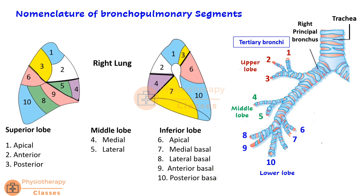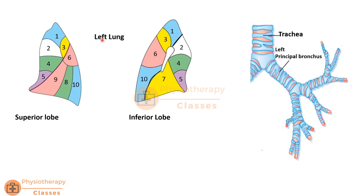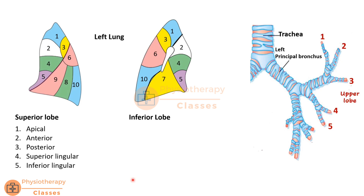Now let us look at the left lung. Again we can see the anterolateral and posteromedial surfaces with the hilum and the bronchial tree with segmental bronchi. There are 10 bronchopulmonary segments in total, but the left lung has only two lobes. The oblique fissure separates the superior or upper lobe from the inferior or lower lobe. In the left lung, both the upper and lower lobes each have five bronchopulmonary segments.